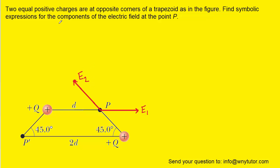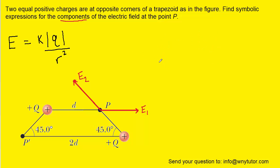This question is asking for symbolic expressions for the components of the electric field. But first we need to understand the equation for the electric field produced by point charges. That equation is: the electric field equals a constant multiplied by the magnitude of the charge divided by the distance squared — the distance being from the charge to point P. For E1, that's E1 = k times |Q| divided by D squared, where D is the marked distance from that charge to point P.